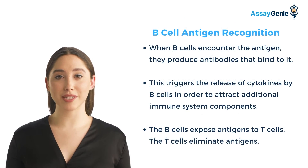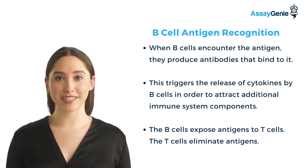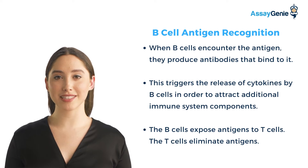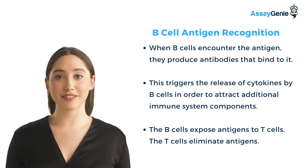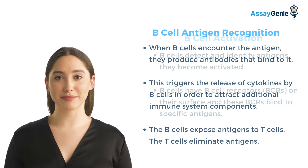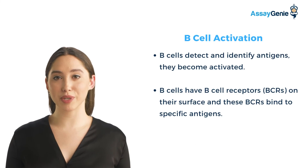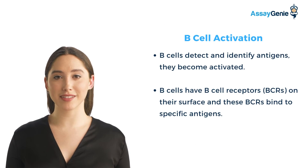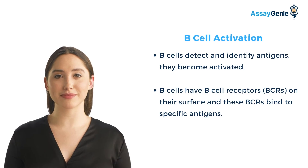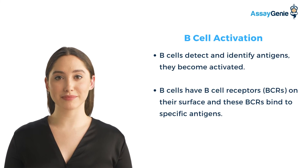Mature B-cells recirculate between secondary lymphoid organs in search of an antigen. B-cells recognize infectious agents by the shape of the antigens on their surfaces. When B-cells encounter the antigen, they produce antibodies that bind to it. Thus, they become active.